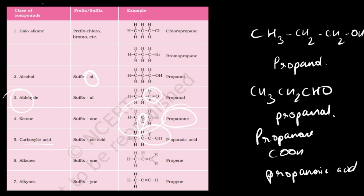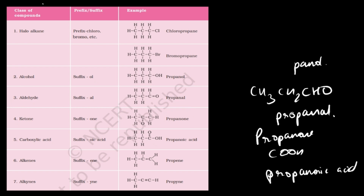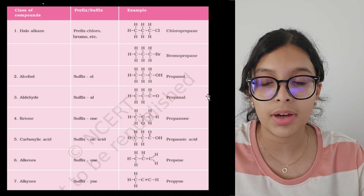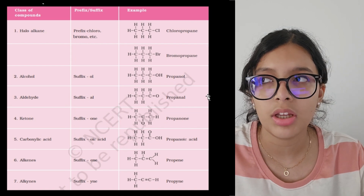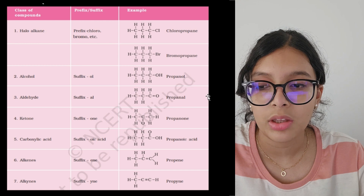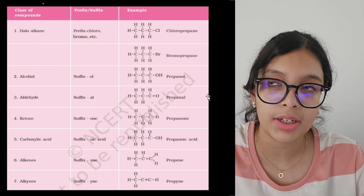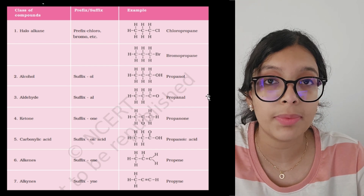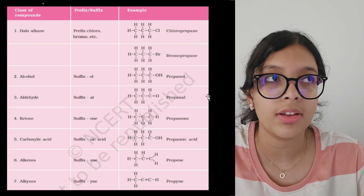Alkenes: propene. Alkynes: propyne. Nomenclature is hard at first, but I'll put up an extra lecture on nomenclature alone with many examples so it will be properly clear. We're done with the first part of this chapter and I'll be uploading the second part as soon as possible. If you liked the video, please subscribe, hit the like button, and comment any doubts.